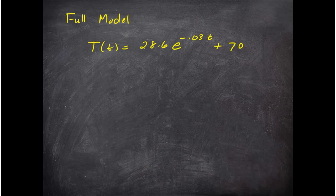Minus r—I divide by 3 on both sides and I get minus r is approximately minus 0.03. So now I've disposed of the last parameter, and so the full model is T of t is equal to 28.6 e to the minus 0.03 t plus 70.